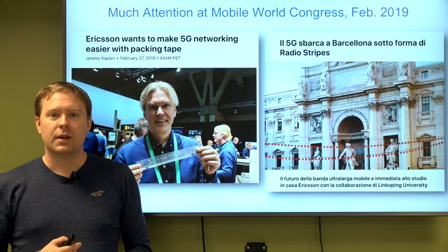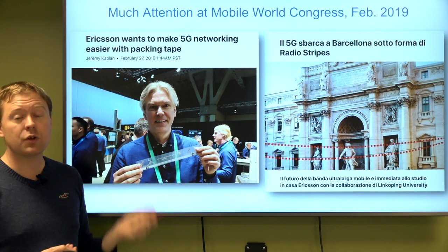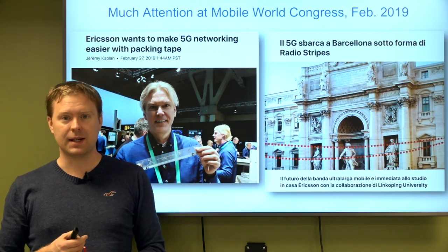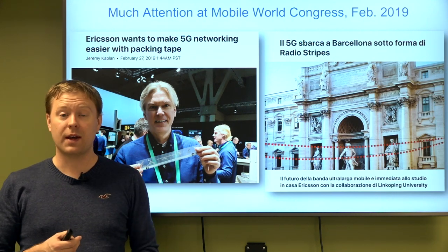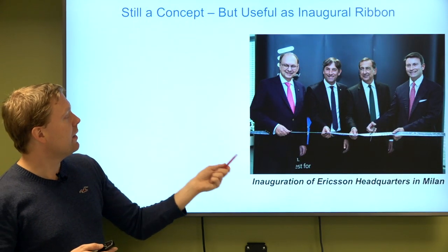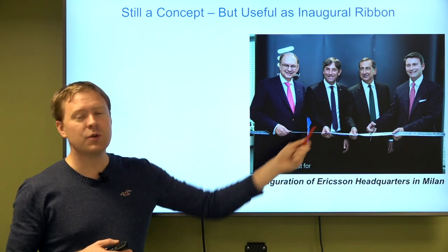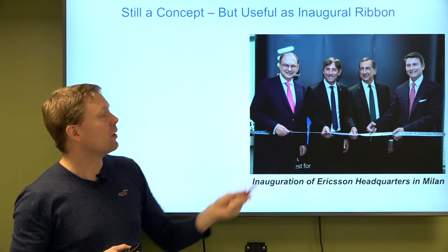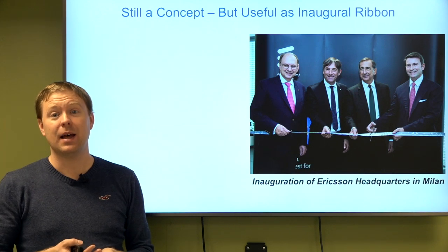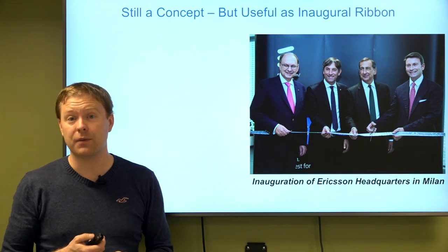This concept was shown at a conceptual level at Mobile World Congress 2019 and received a lot of coverage in both English and Italian media, partly because our industrial PhD student who co-invented this technology is from Italy. When Ericsson inaugurated its headquarters in Milan, the radio stripe was used as the inaugural ribbon — the only physical use case of radio stripe so far, since it is still at the conceptual stage, but something we really want to deliver in the future, for example for 6G.